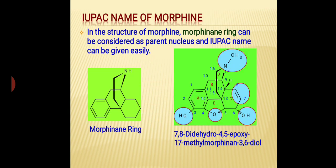The next part is the IUPAC name of morphine. We have to consider morphine and its ring as the parent nucleus and identify the differences between morphine and the parent structure, highlighted as encircled portions. We give names to these highlighted portions and arrange them alphabetically: first, 7,8-didehydro; then 4,5-epoxy; then methyl group at position 17. We then use the parent nucleus name morphine, and finally attach the suffix for the 2 OH groups, which is 3,6-diol.